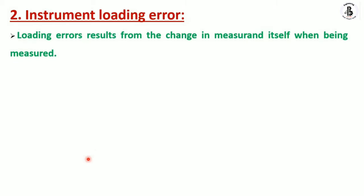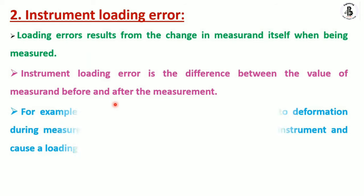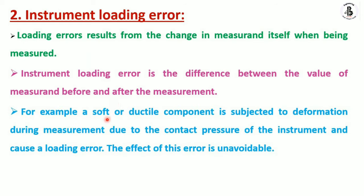The second main category is instrumental loading error, which results from improper alignment or physical contact between the instrument and the workpiece. The loading error is the difference between the measured value before and after measurement. For example, soft or ductile components may deform during measurement due to contact pressure. High contact pressure causes loading error, and this effect is largely unavoidable and depends on the skill of the operator.